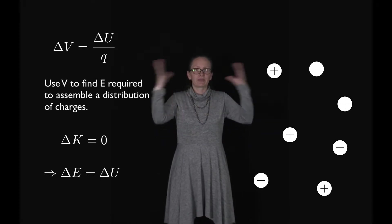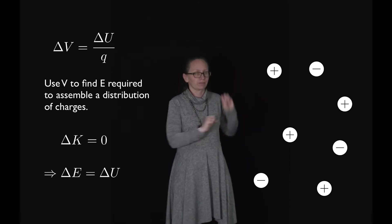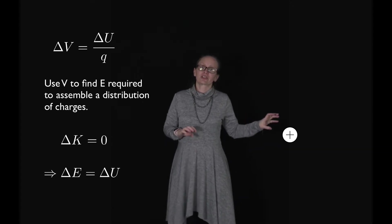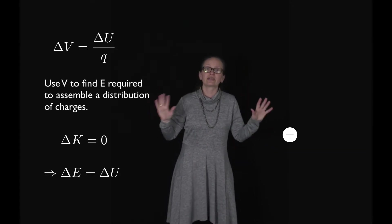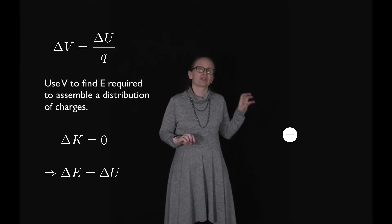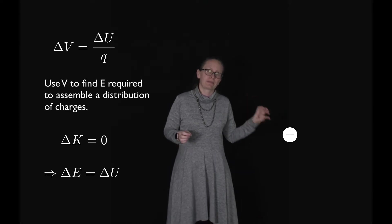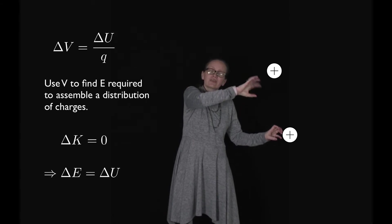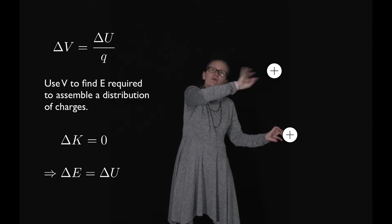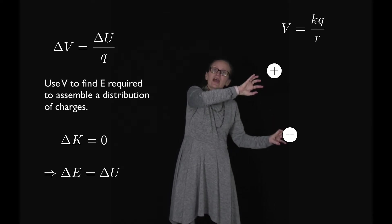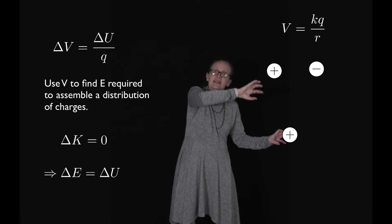To illustrate what we mean by this, let's imagine assembling some charge distribution. When we place the first charge, there are no other charges there, so there is no electric field, and we don't need to do any work against that electric field. So there is no change in the electrical potential energy when we place the first charge. However, when we now move a second charge into the field of that first charge, we can work out the voltage at the point where this second charge ends up, and using that voltage we can work out the change in potential energy of the system as we add that second charge.